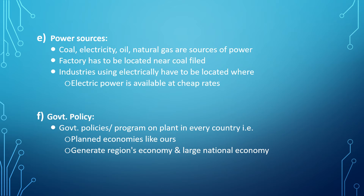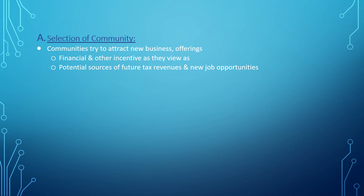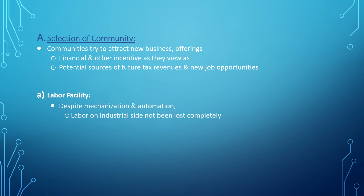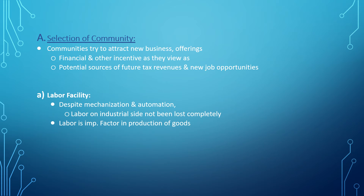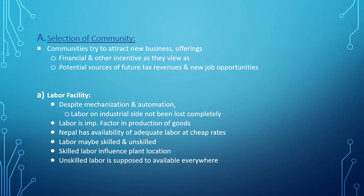Government policy and programs influence plant location in every country, affecting plant-level economy as well as regional and national economies. In the selection of the community, communities try to attract new businesses by offering financial and other incentives, viewing them as sources of future tax revenues and job opportunities. Despite mechanization and automation, labor remains an important factor in production. Countries like Nepal offer adequate labor at cheap rates; labor may be skilled or unskilled, with skilled labor significantly influencing plant location.